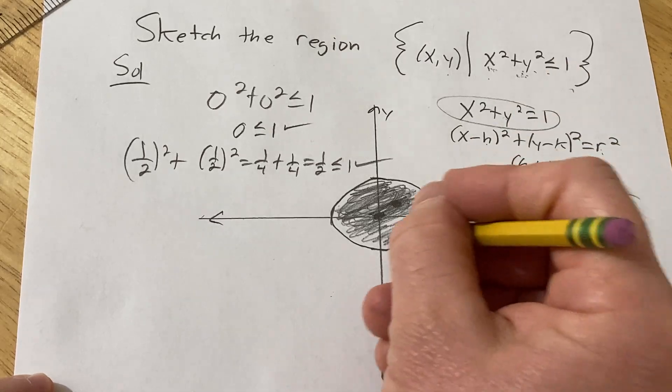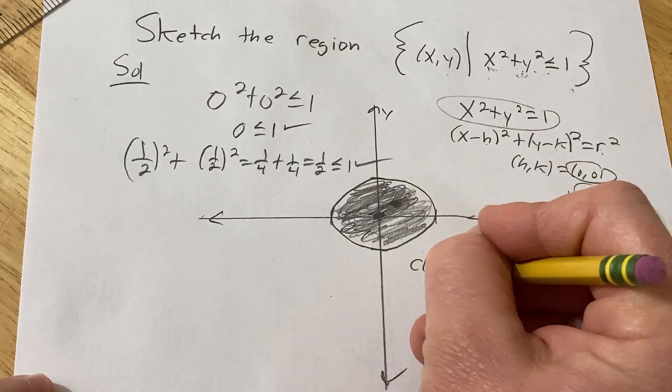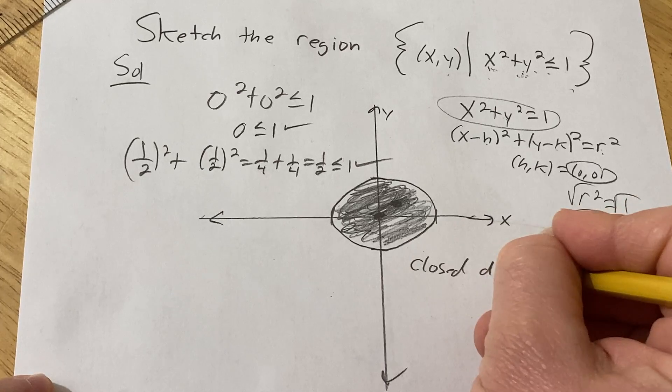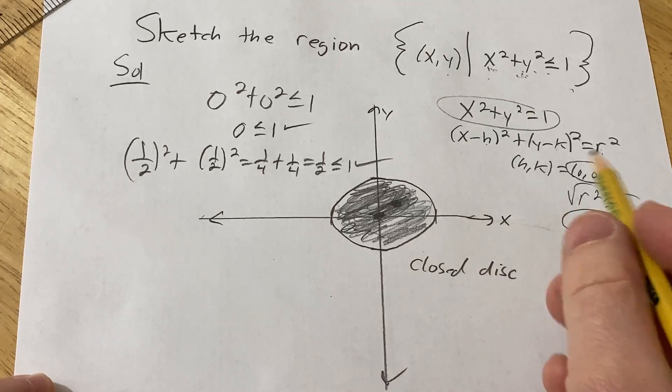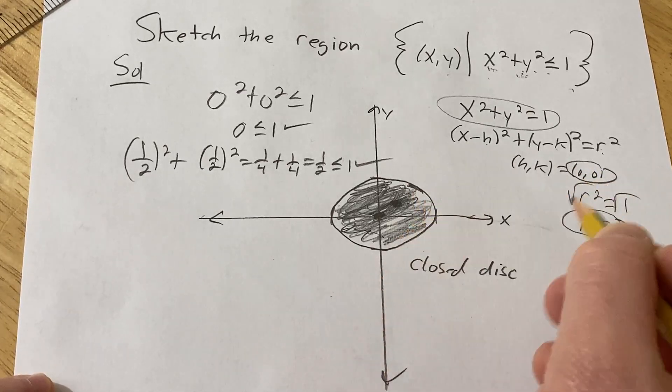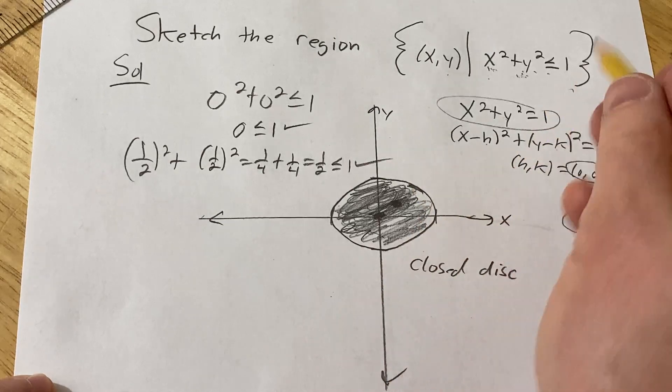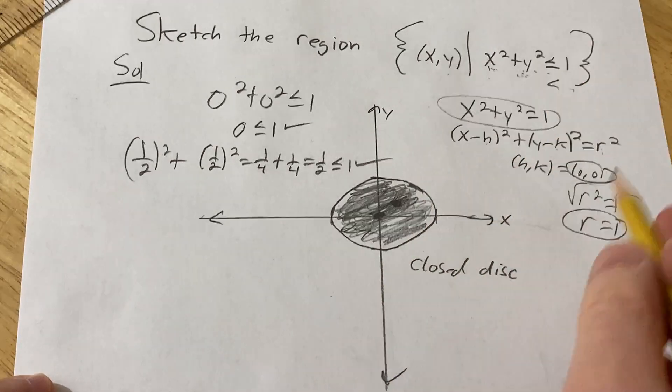This is called a disk. It's called the closed disk. And the reason it's called the closed disk is because it includes the circle. If it didn't include the circle, like if it was less than, it would be called an open disk.